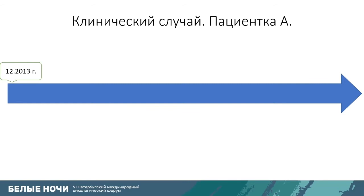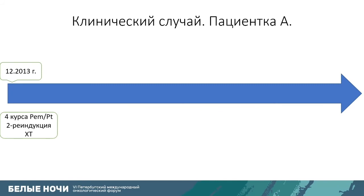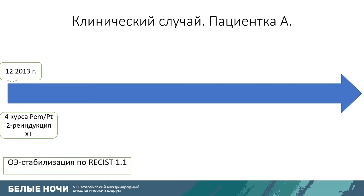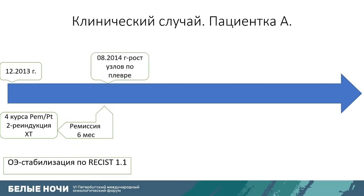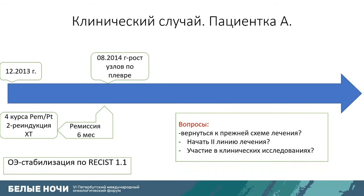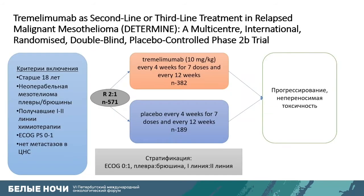After the 2013 progression, we returned to pemetrexed with a platinum drug, since no progression had been observed under this scheme previously. The effect was stabilization. Remission was much shorter — six months — and in August 2014 we noticed growth of nodes in the pleura. The question arose: should we return to the previous scheme, start a second line, or offer the patient participation in a clinical trial, given that all first-line standards had been used?